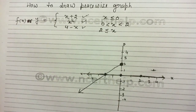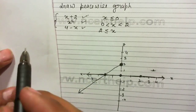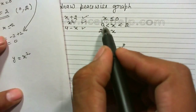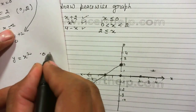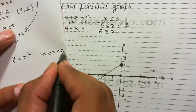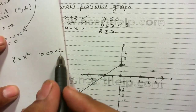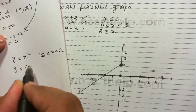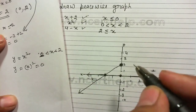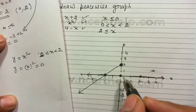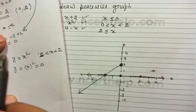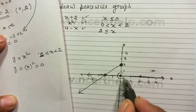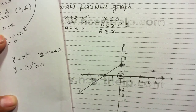Now I will draw the second equation, y equals x squared. The interval here is x greater than 0 and less than 2 — not equal to 2. If I put x equal to 0, the square of 0 gives me 0, so the first point would be (0, 0). But since 0 is not included in the solution, I will use a hollow circle to represent this point.